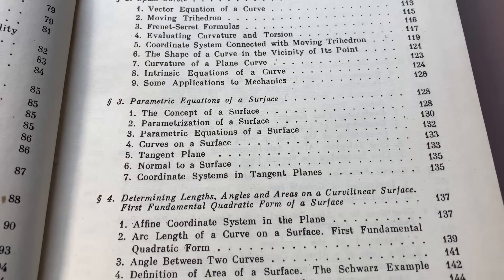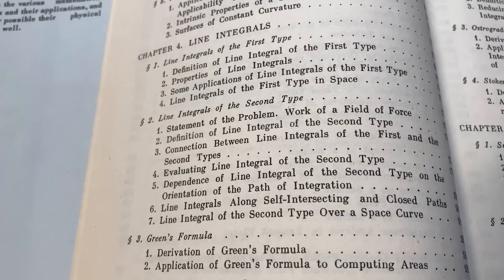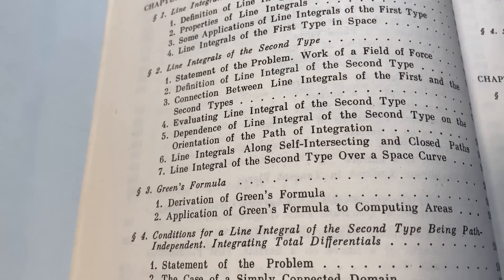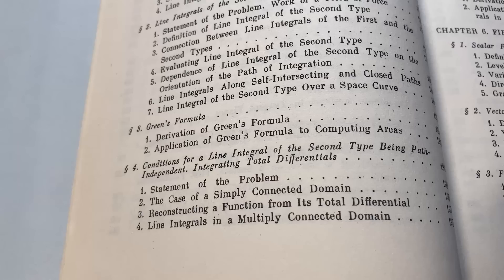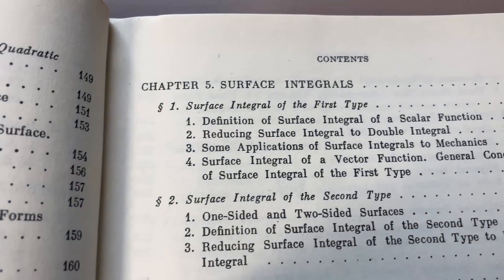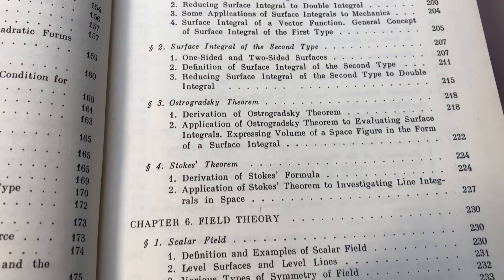More than you would get in a lot of other books. Chapter 4 is on the line integrals. You have line integrals of the first type, line integrals of the second type, Green's formula. Conditions for a line integral of the second type being path-independent. And then over here we have surface integrals. A lot of these topics you would see in a Calculus 3 course.